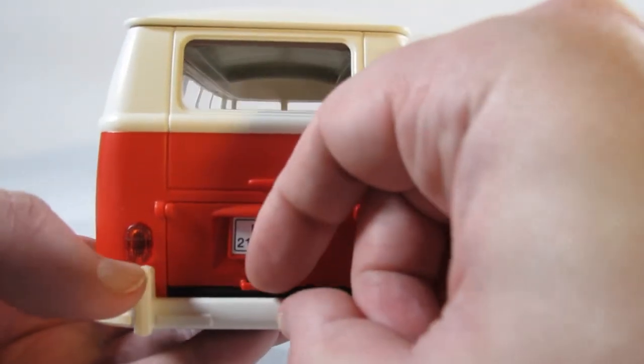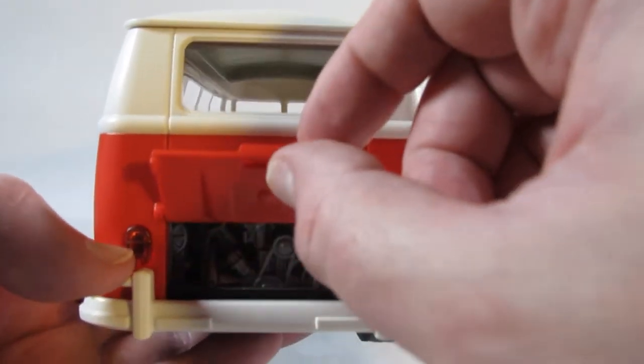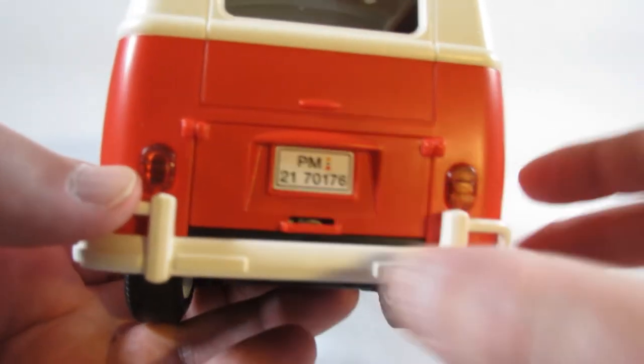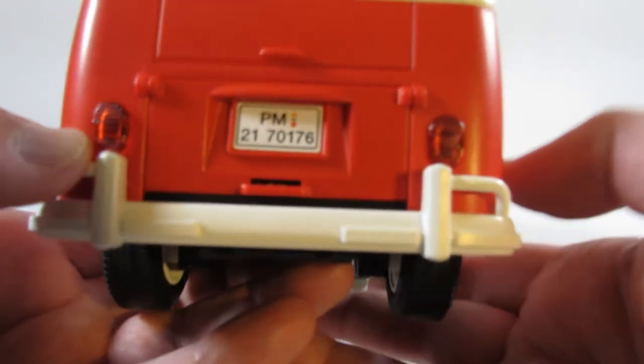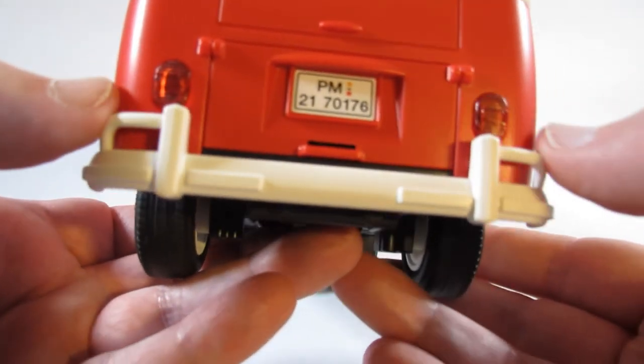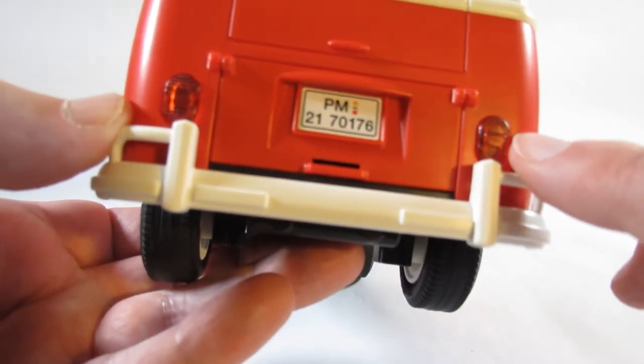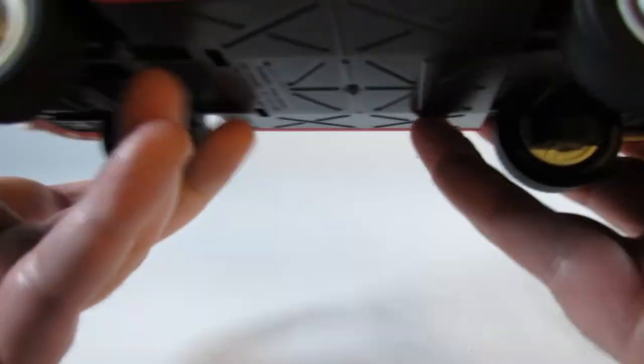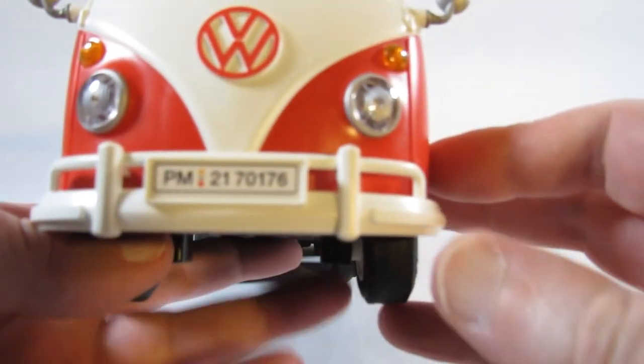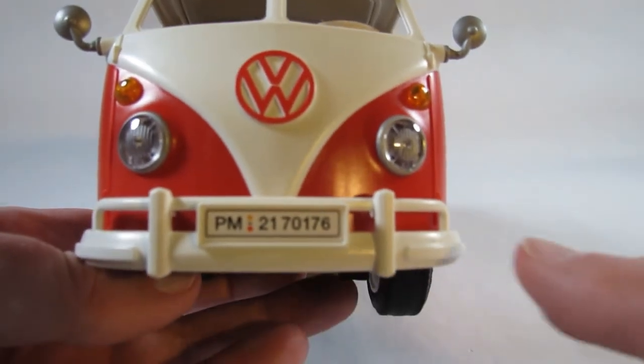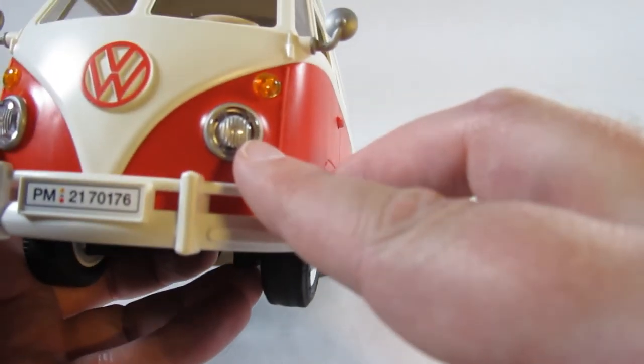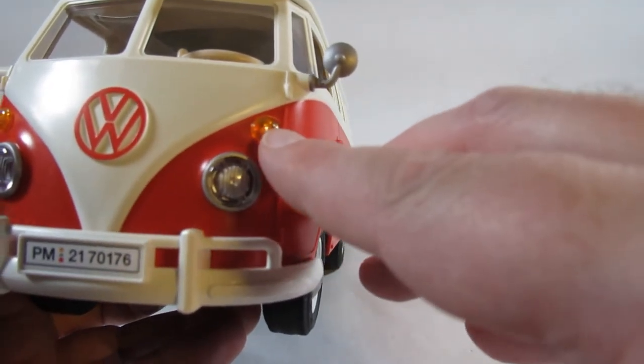In the back here, we can open this and we can see the engine in there. Looks nice. We have a license plate sticker there. We have to attach these lights, although they don't light up. We just put in the colored plastic. A license plate sticker here. And these headlights were already attached. We have to attach these up here.